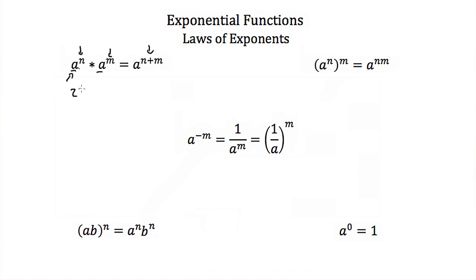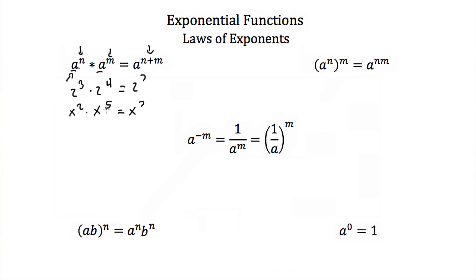So if I had 2 cubed times 2 to the 4th, that's equal to 2 to the 7th — 3 plus 4, so just add the exponents. x squared times x to the 5th would be equal to x to the 7th, because you just add the 2 and the 5.